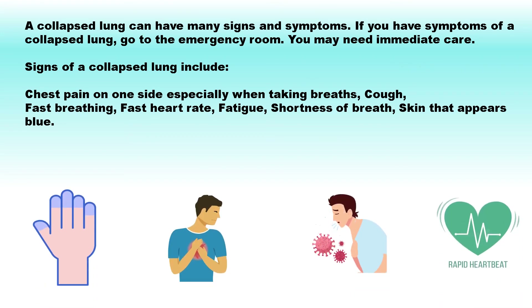A collapsed lung can have many signs and symptoms. If you have symptoms of a collapsed lung, go to the emergency room — you may need immediate care. Signs of a collapsed lung include chest pain on one side especially when taking breaths, cough, fast breathing, fast heart rate, fatigue, shortness of breath, and skin that appears blue.